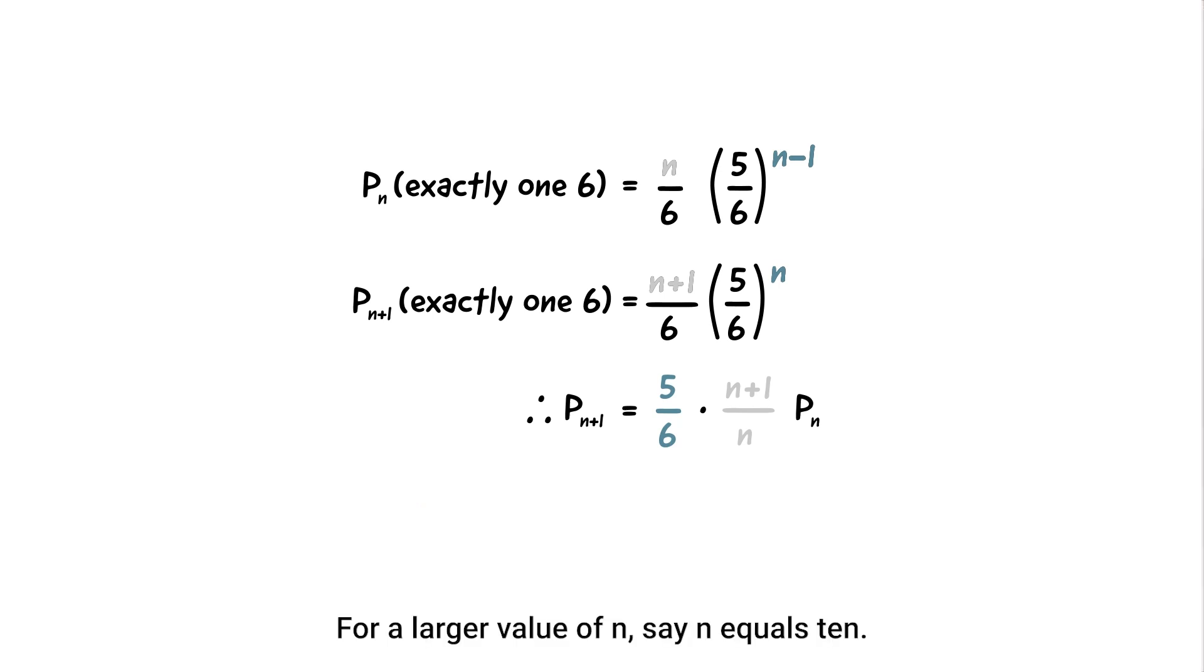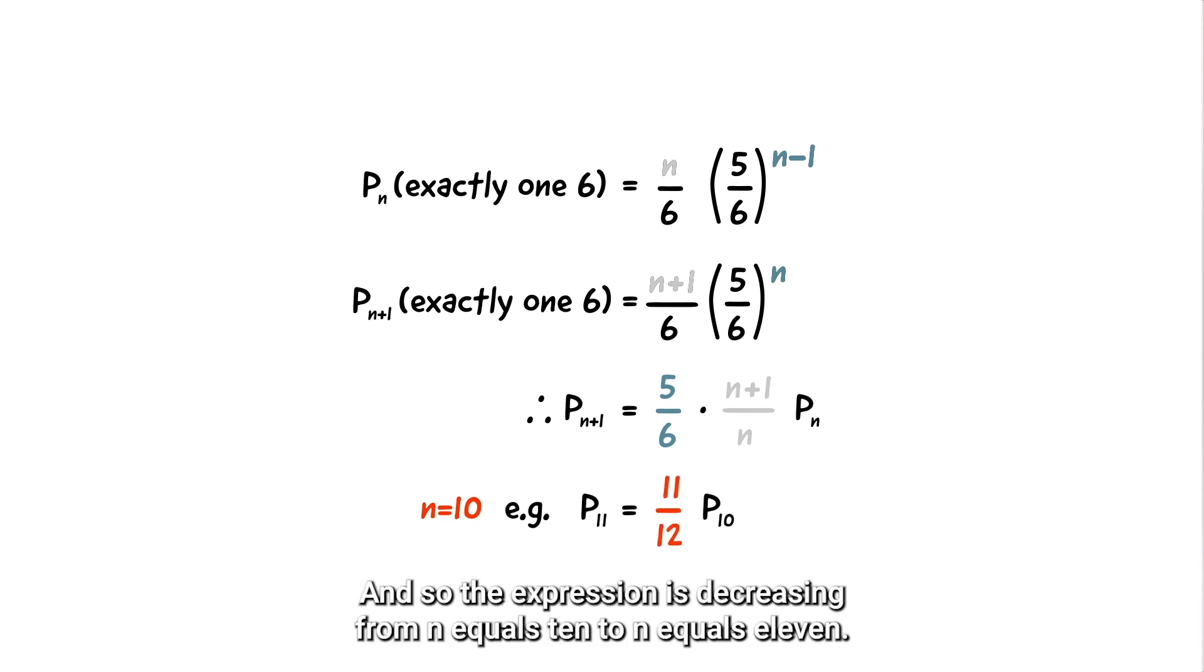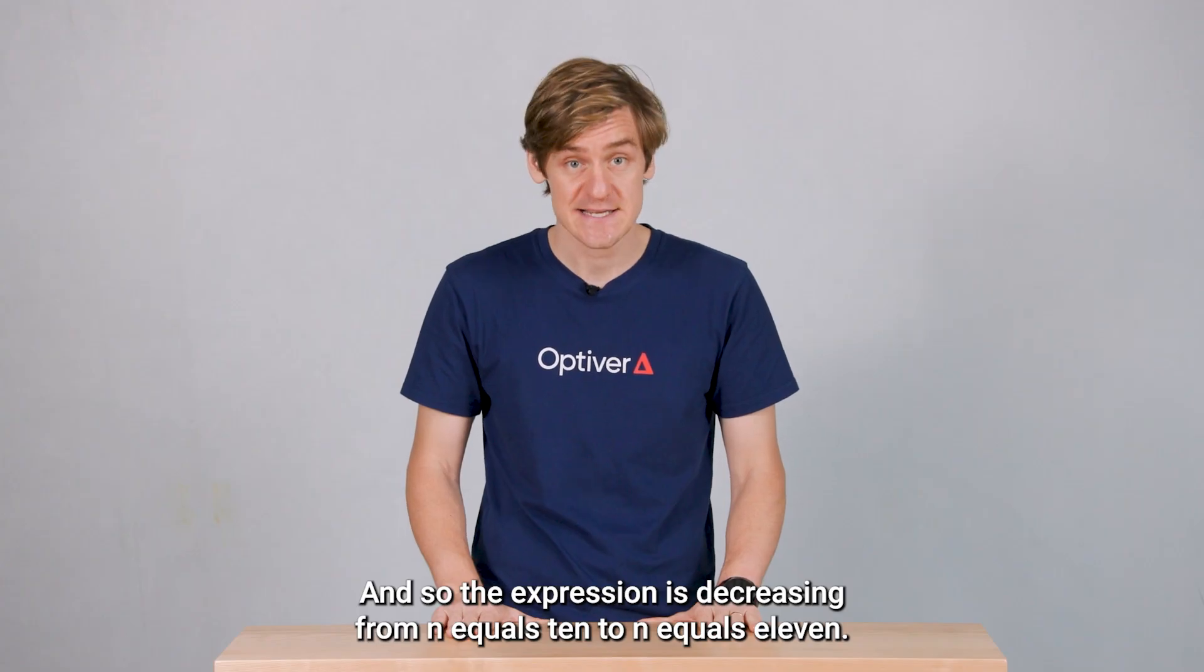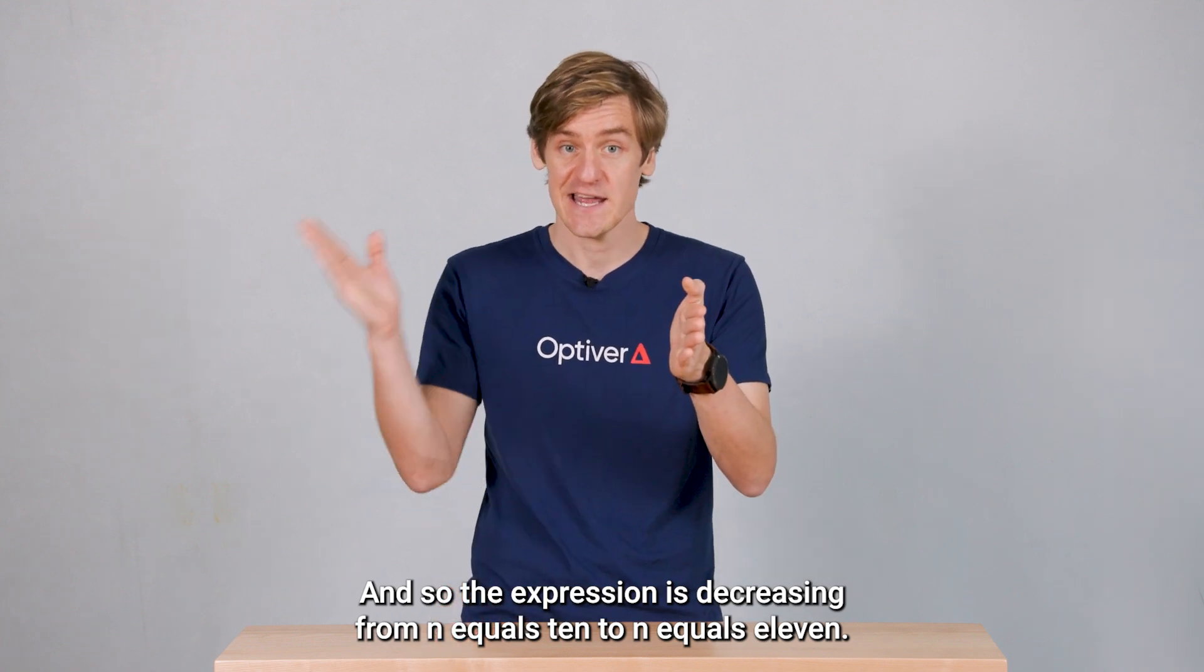For a larger value of n, say n equals 10, the factor becomes 11 over 12, which is less than one. And so the expression is decreasing from n equals 10 to n equals 11.